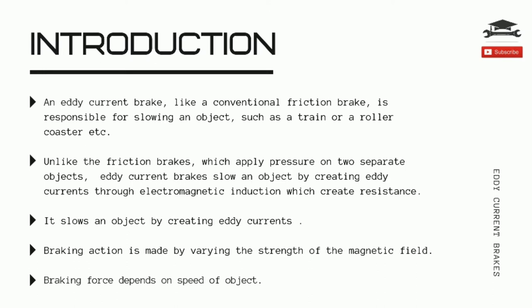Unlike friction brakes where the drag force that stops the moving object is provided by friction between two surfaces pressed together, the drag force in an eddy current brake is an electromagnetic force between a magnet and a nearby conductive object in relative motion, due to eddy currents induced in the conductor through electromagnetic induction.